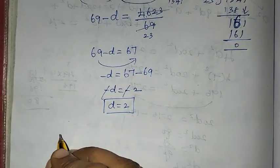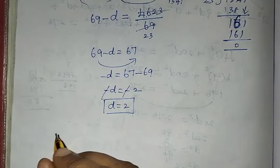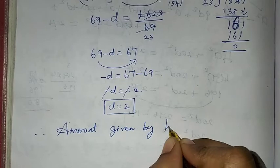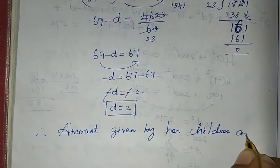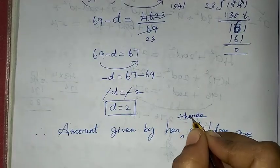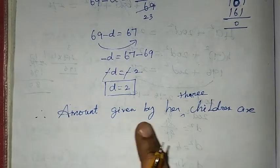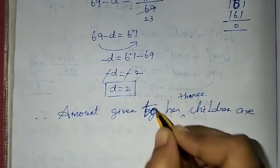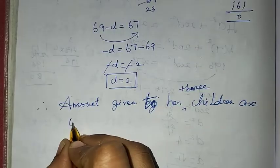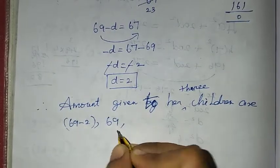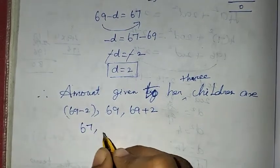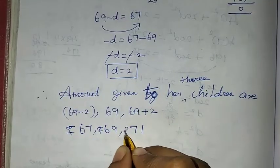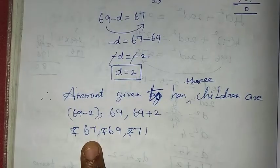Now the 3 children's amounts are a - d, a, and a + d. Substituting: 69 - 2 = 67, then 69, then 69 + 2 = 71. So the amounts given by the mother to her three children are rupees 67, rupees 69, and rupees 71. You can verify: 67 + 69 + 71 = 207. These are the least, middle, and highest amounts.